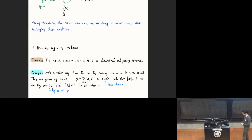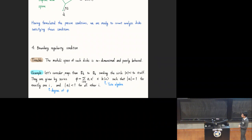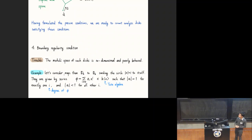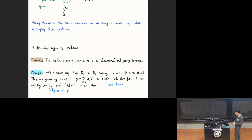So first condition I want to put for the counts is a boundary condition for the regularity of the boundary. The trouble is that if we just naively consider the moduli space of non-Archimedean curves with boundary, or the moduli space of non-Archimedean analytic disks, it's clearly infinite dimensional and poorly behaved. So let me start with this very basic example.